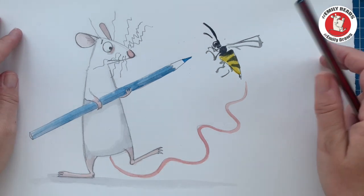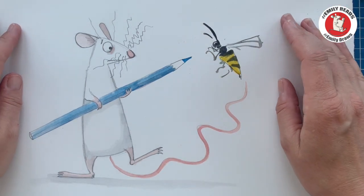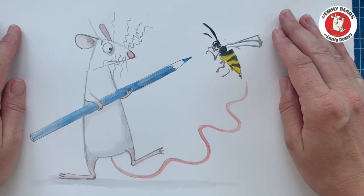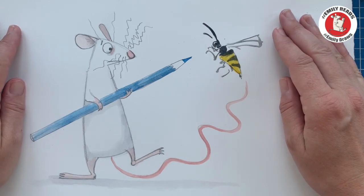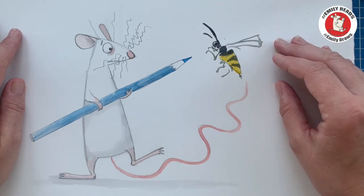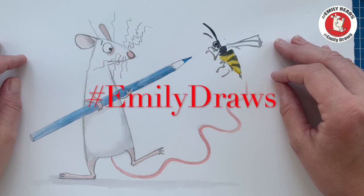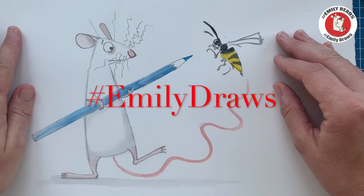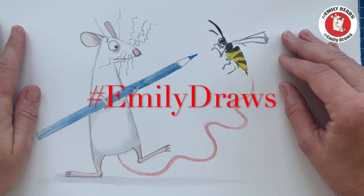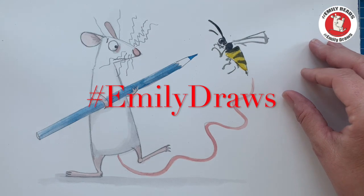So I would really, really, really like it if you could show me your drawings of your mouse's fears. So if you want to post them, if you're on Facebook, you could put them in the comments thread underneath this video. If you're on Instagram, you could put them on your mum and dad's Instagram account with the hashtag EmilyDraw so that I can find them. And if I see one, I will definitely say hi. Thanks very much for coming. See you next time.